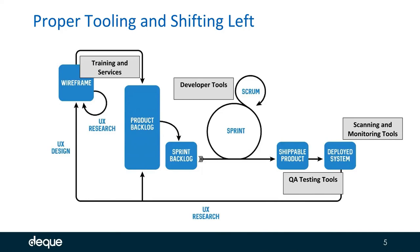Starting all the way at the left with design, wireframes, and backlog creation: designing with inclusivity is absolutely a key part of getting an accessibility program to the next level. Design is one of the broadest-touching stages in the SDLC with regard to accessibility. There are trainings, services, and education about how to design with inclusivity and how to create annotated wireframes so that the backlog is created in a way that maintains as much accessibility as possible at that stage.